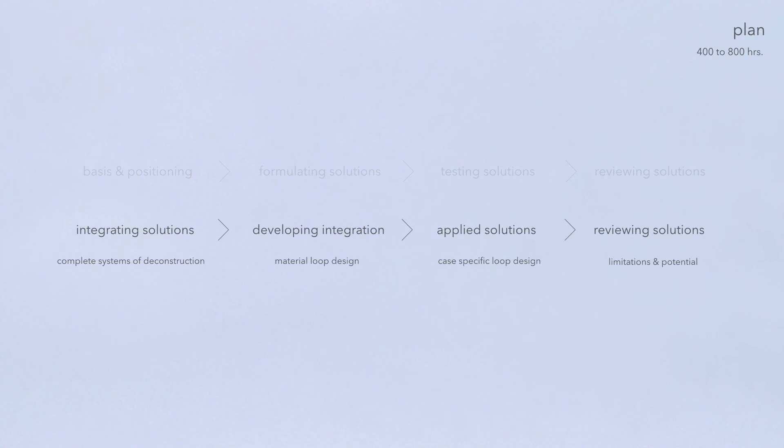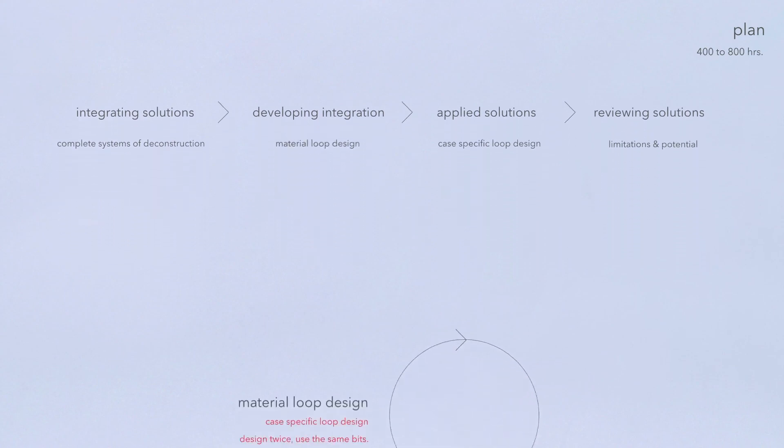This integrated solution will go beyond designing one dwelling so its components can be reused. By designing two or more of contrasting architectural styles, the design for and design with process can be tested.